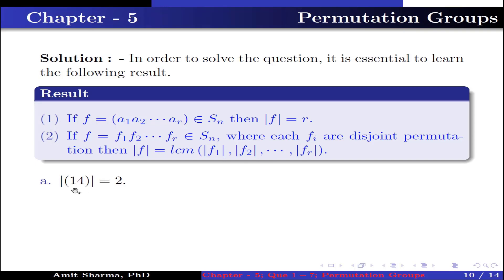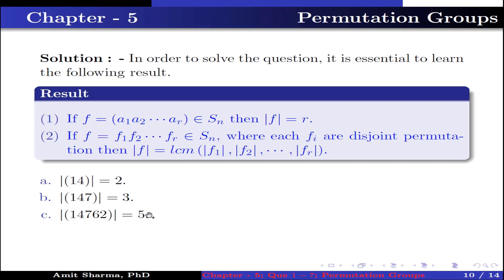Part A: order of (1 4) is 2, because it is a 2-cycle permutation. Part B: order of (1 4 7) is 3, because it is a 3-cycle permutation. Part C: order of (1 4 7 6 2) is 5, because it is a 5-cycle permutation. Part D: order of (a1, a2, ..., ak) is k, because it is a k-cycle permutation.